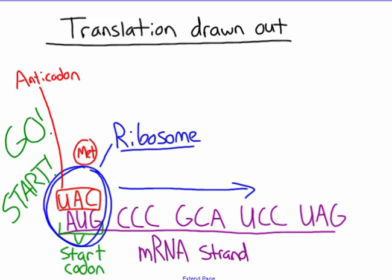Here we go. A couple of things I want to explain right away. The blue circle is going to be your ribosome. What comes in right away is the anticodon — UAC — and it matches up with the start codon, which is AUG. So the base pair rule still works: A goes to U, U goes to A, G goes to C. The anticodon brings the amino acid with it — it's going to bring MET, the amino acid methionine — and it's going to start making the amino acid chain.